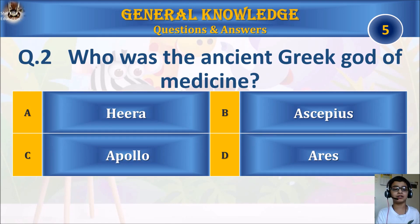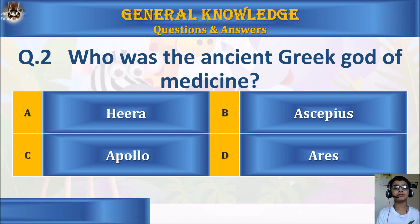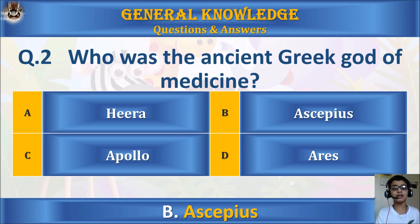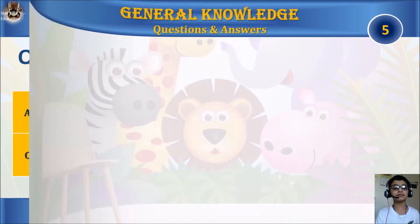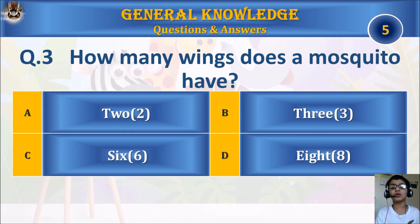Question 2: Who was the ancient Greek god of medicine? A: Hero, B: Asclepius, C: Apollo, or D: Ares. Your time starts. The answer is B: Asclepius.